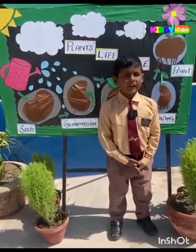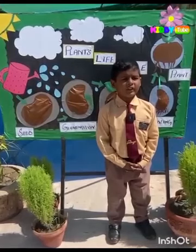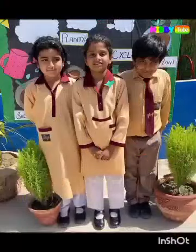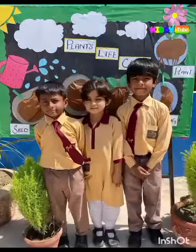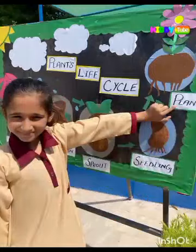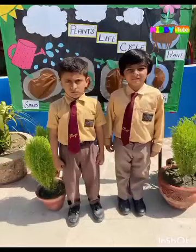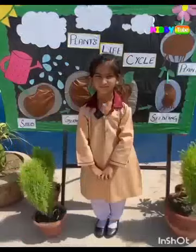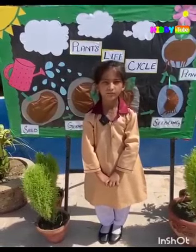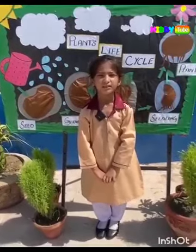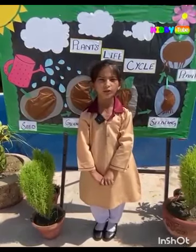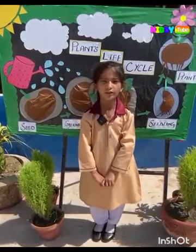The plants grow in the field, and we get oxygen from plants. The life cycle of plants begins when a seed is produced by other plants growing in the ground.